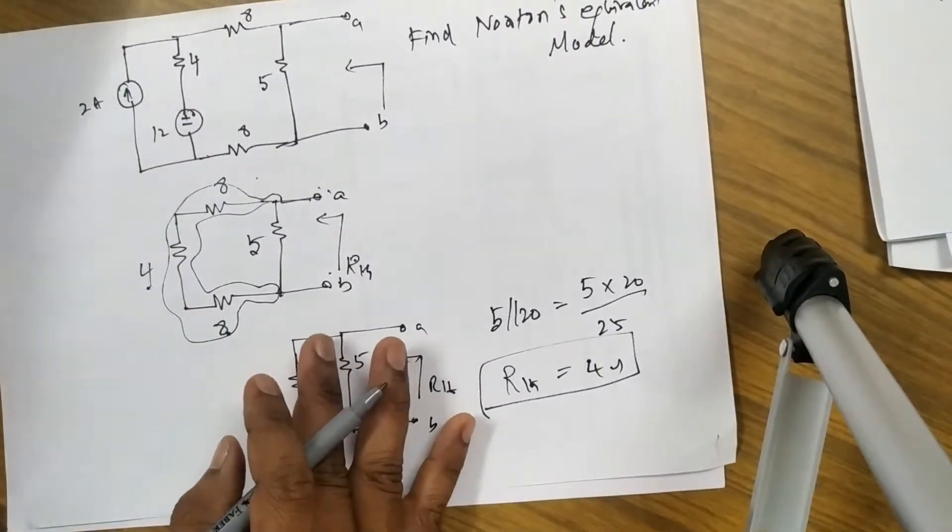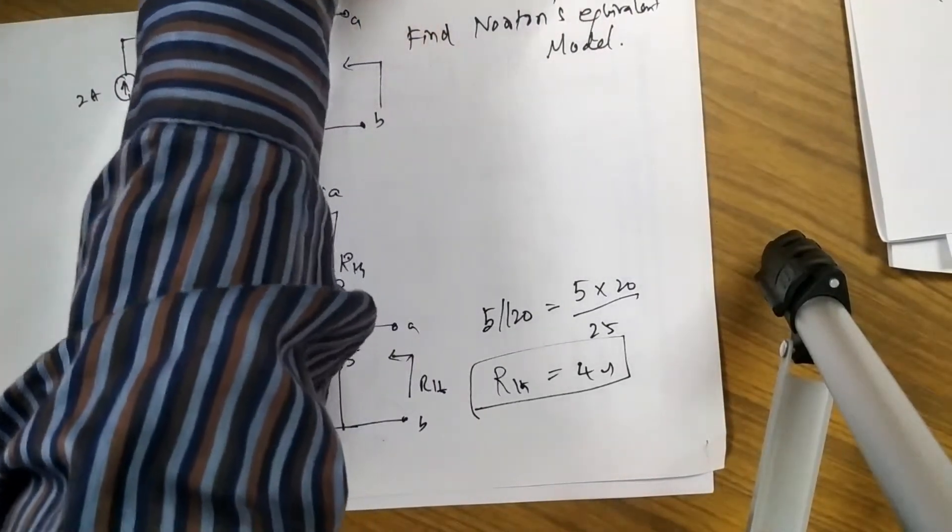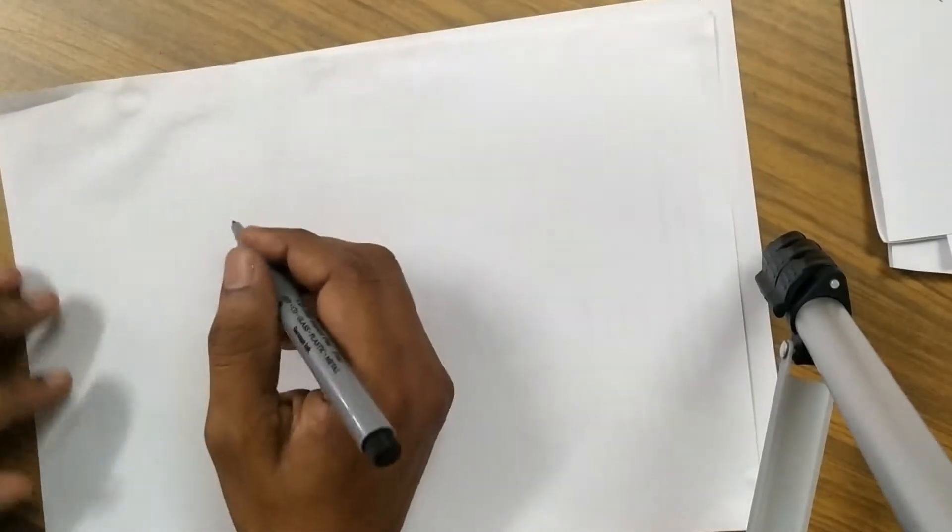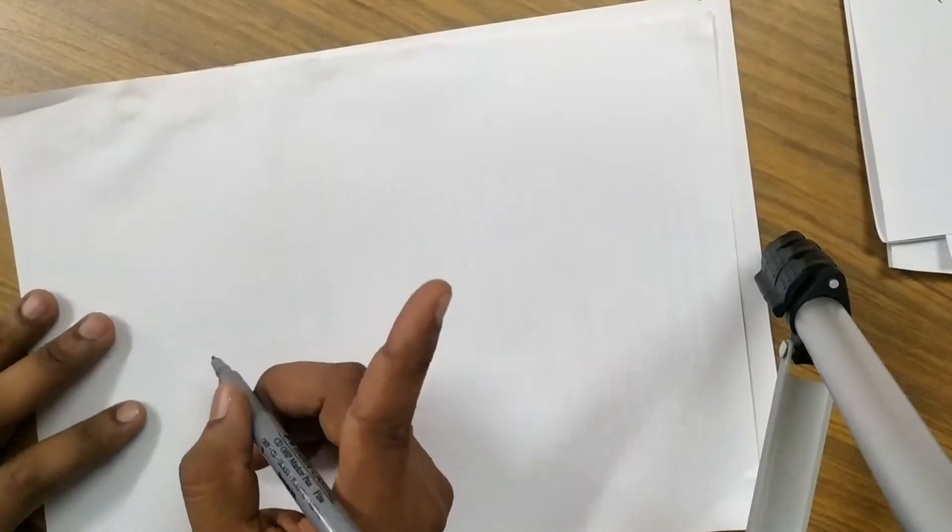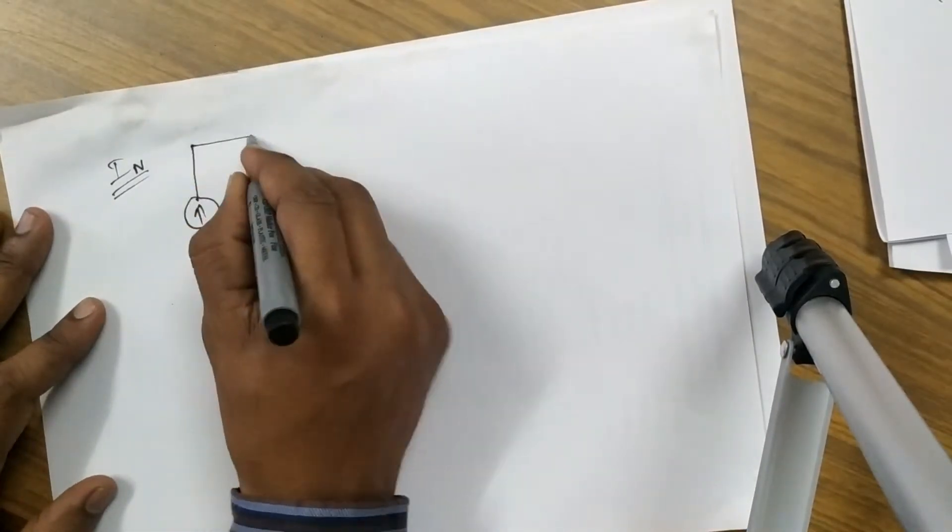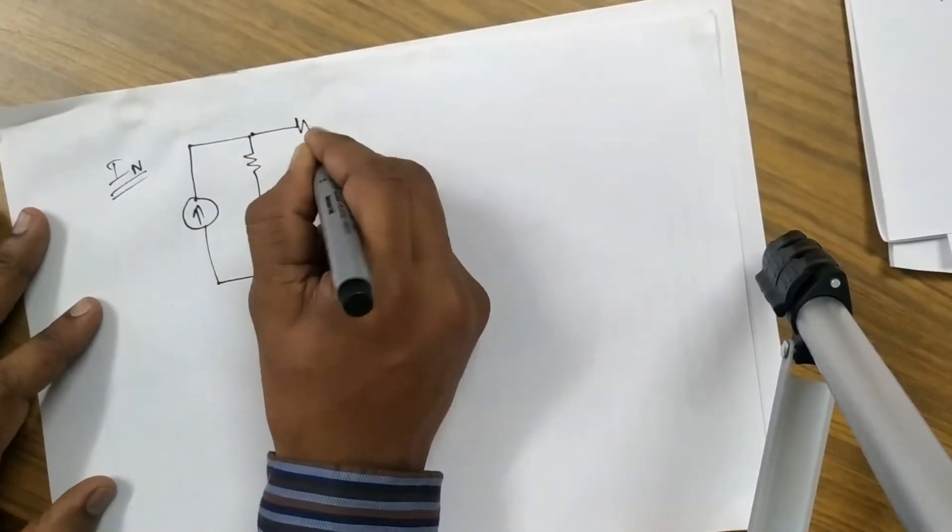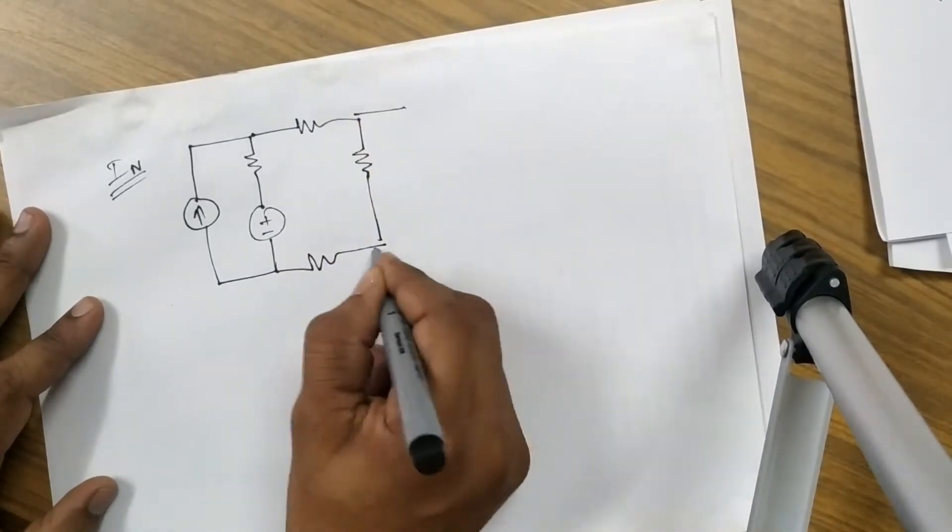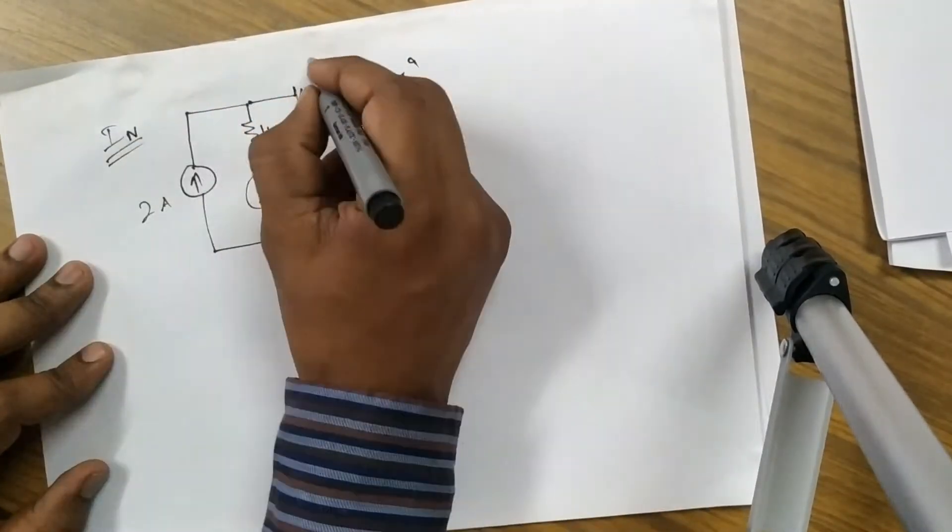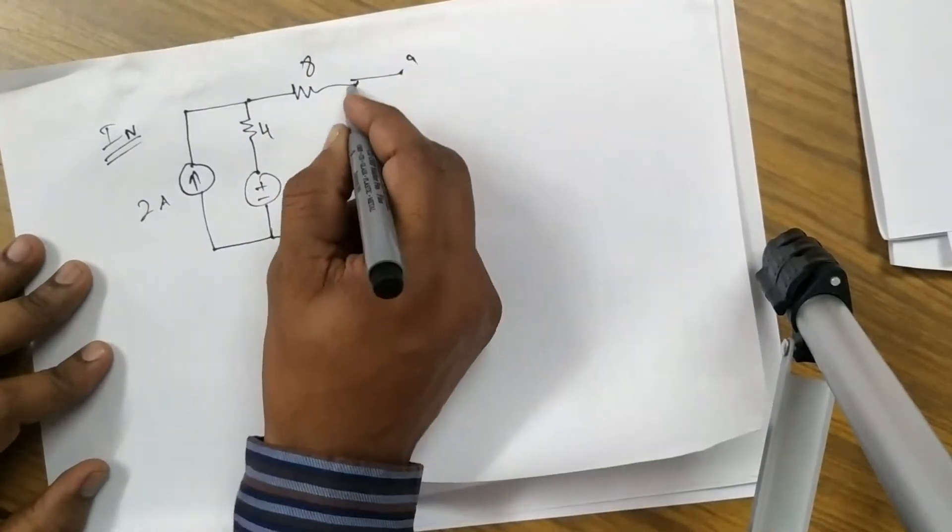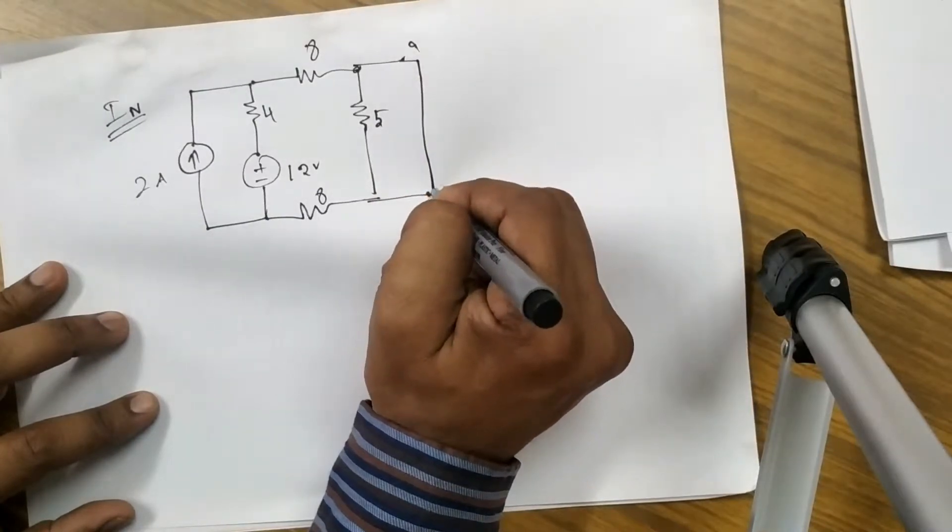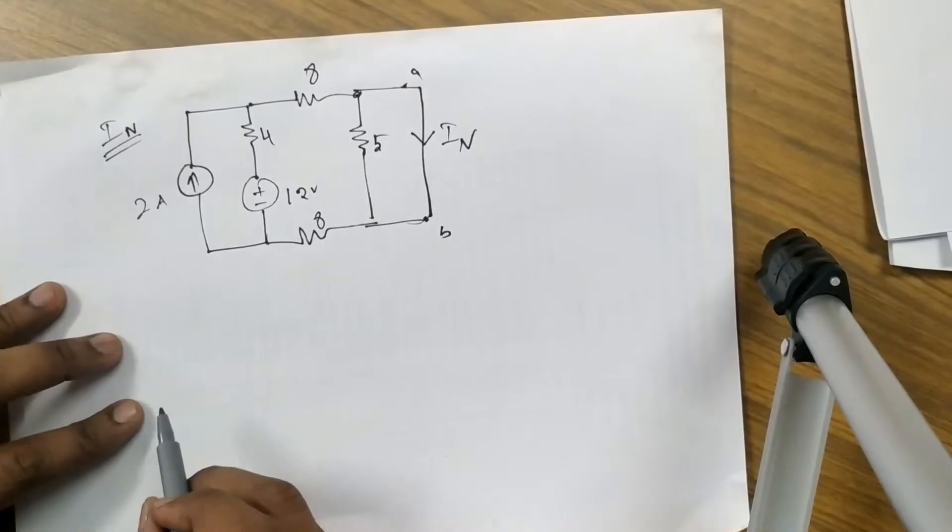Now we want to find out In value which means Norton's current source value. To do this we want to short circuit the load terminal. So to get In, first let us draw the circuit with the sources: A and B point, 2 amps, 12 volt, 4, 8. Now we want to short the load point to get the current through that short circuit point. You got it?